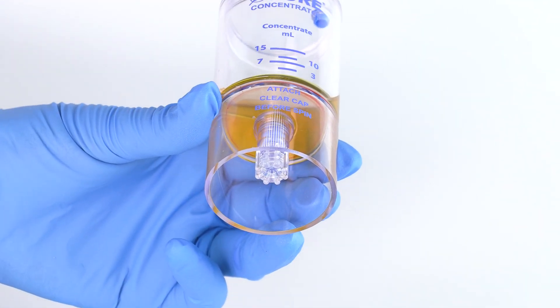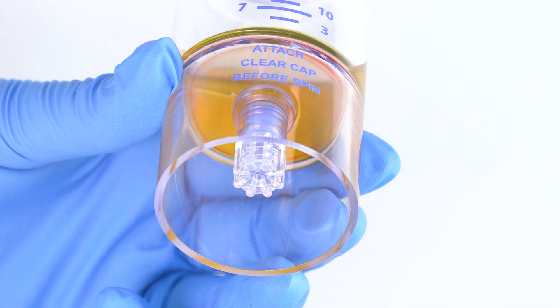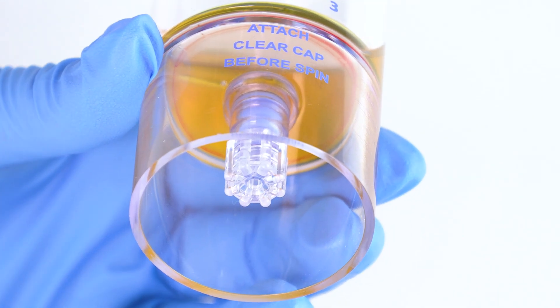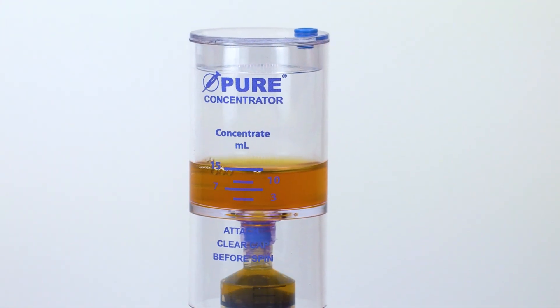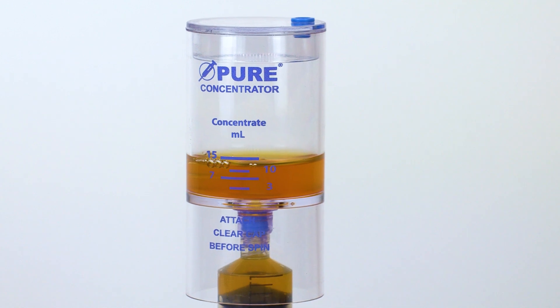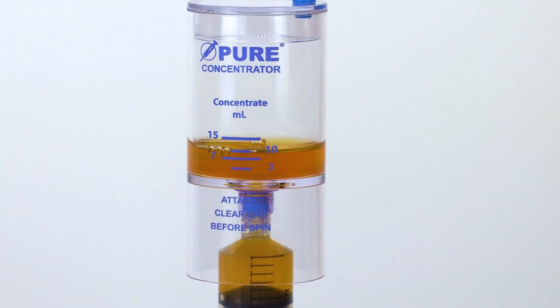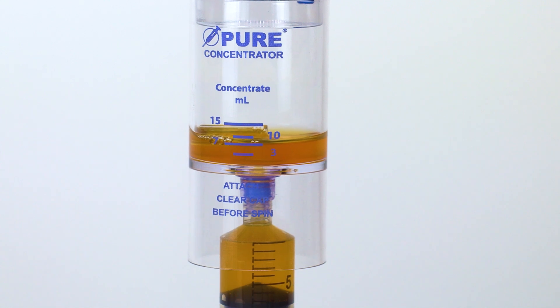After centrifugation, the platelet buffy coat layer will be clearly visible at the bottom of the device. Attach a sterile syringe to the needleless port and aspirate plasma, leaving 3 to 4 milliliters, or the desired amount, in the device.